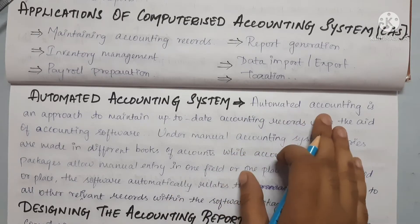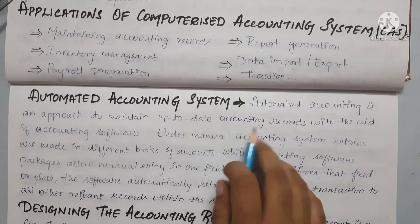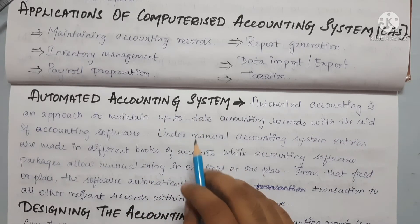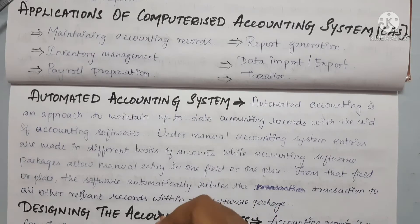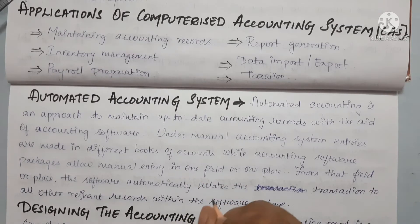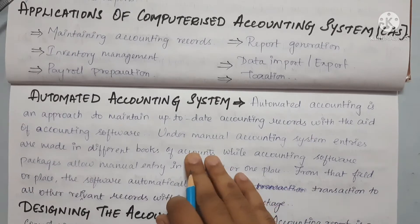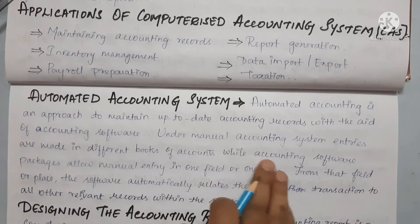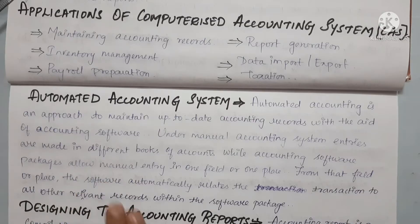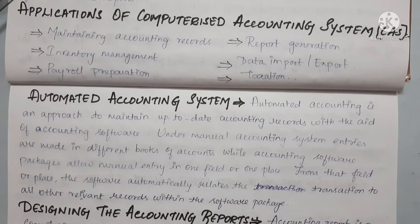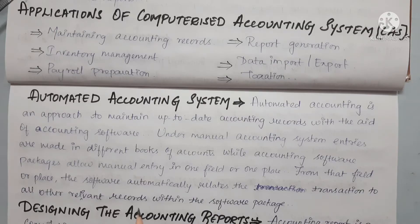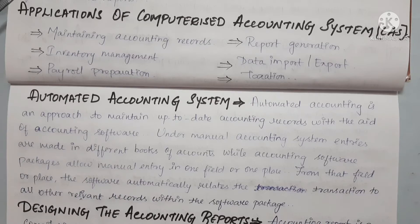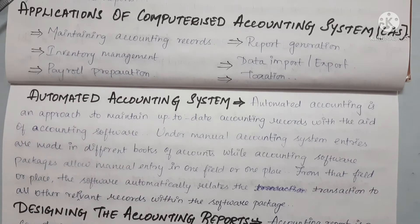Automated Accounting Systems — automated accounting is an approach to maintain up-to-date accounting reports with the aid of accounting software. We can see our reports updated day-to-day with the help of accounting software. Under manual accounting systems, entries are made in different books of accounts, while accounting software packages allow manual entry in one field or one place.